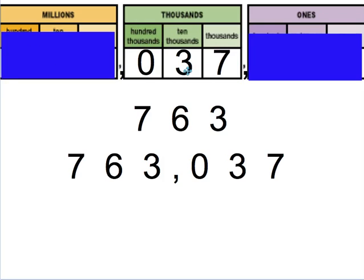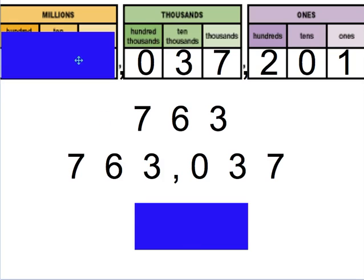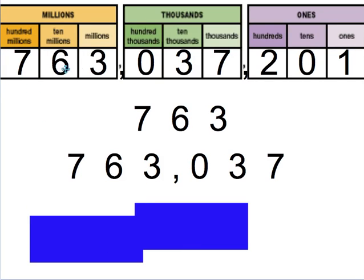Now you look at the next period. We have the 037, which is just read as 37, since there's no hundred. This comma, which is in the thousands period, would say thousands. And then this last section, 201, is read as 201. There's no comma afterwards, so we don't have anything else to say. Altogether, when you put it together, you would get 763,037,201. Take it in chunks of three.